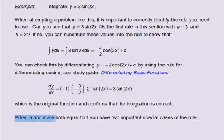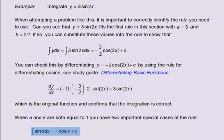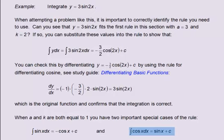When a and k are both equal to 1, you have two important special cases of the rule. The integral of sin x with respect to x equals minus cos x plus c. And the integral of cos x with respect to x equals sin x plus c.